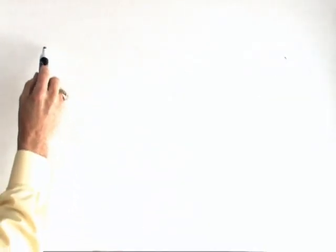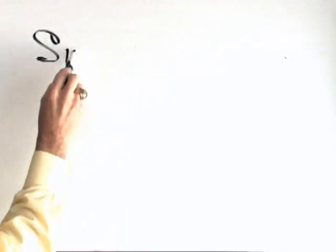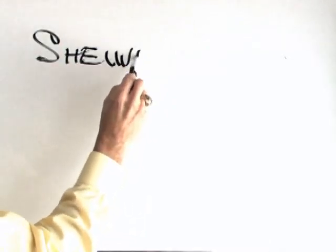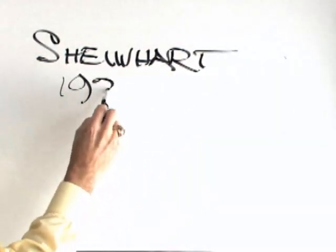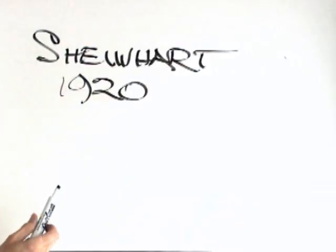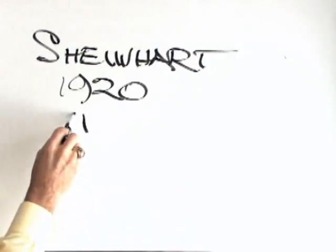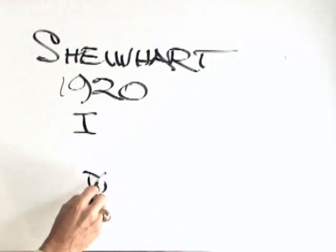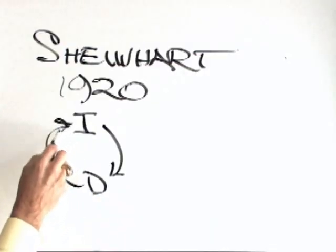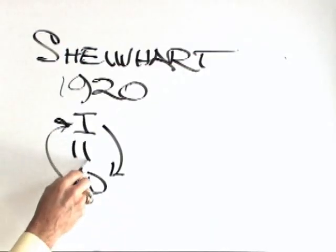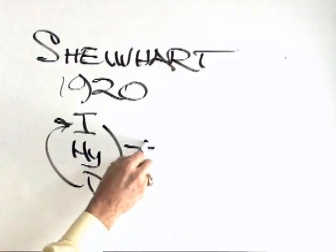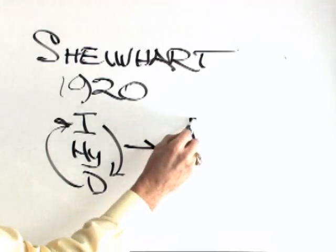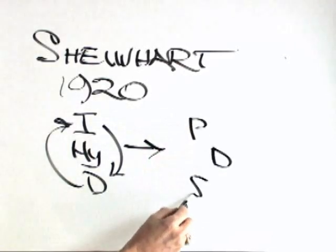Historically, the PDSA cycle was developed by a gentleman by the name of Walter Shuhart. Walter Shuhart, back in the 1920s working at Western Electric in Cicero, Illinois and in New Jersey, took the scientific method, that is inductive and deductive thinking, where you go from the specific to the general, from the general to the specific, with hypothesis testing. He took that scientific method and turned it into a very simple notion that when we're going to do something, we're going to plan it, do it, study and act.